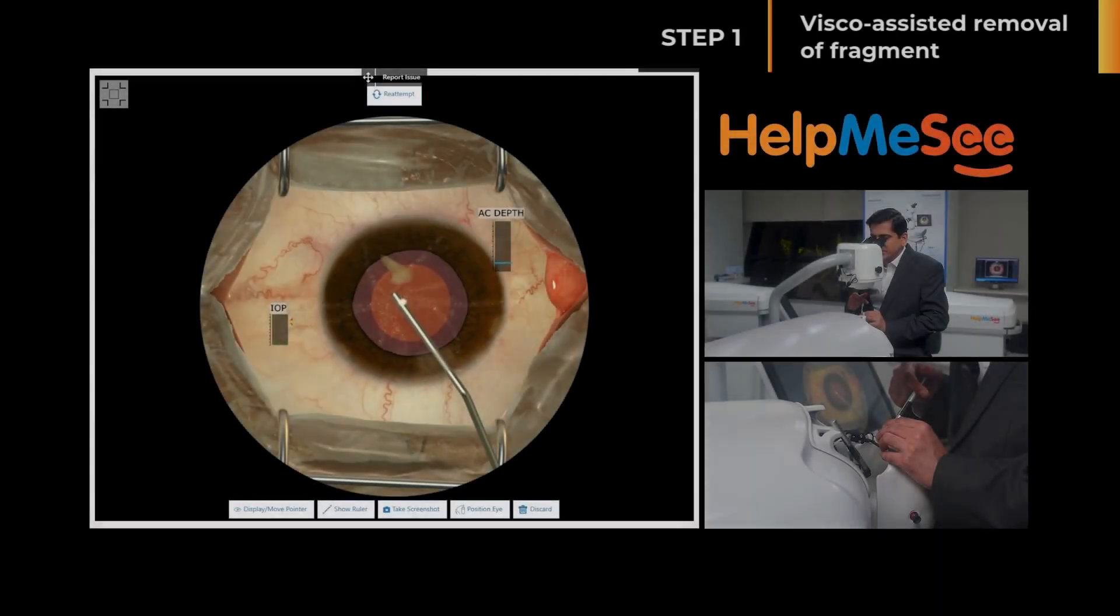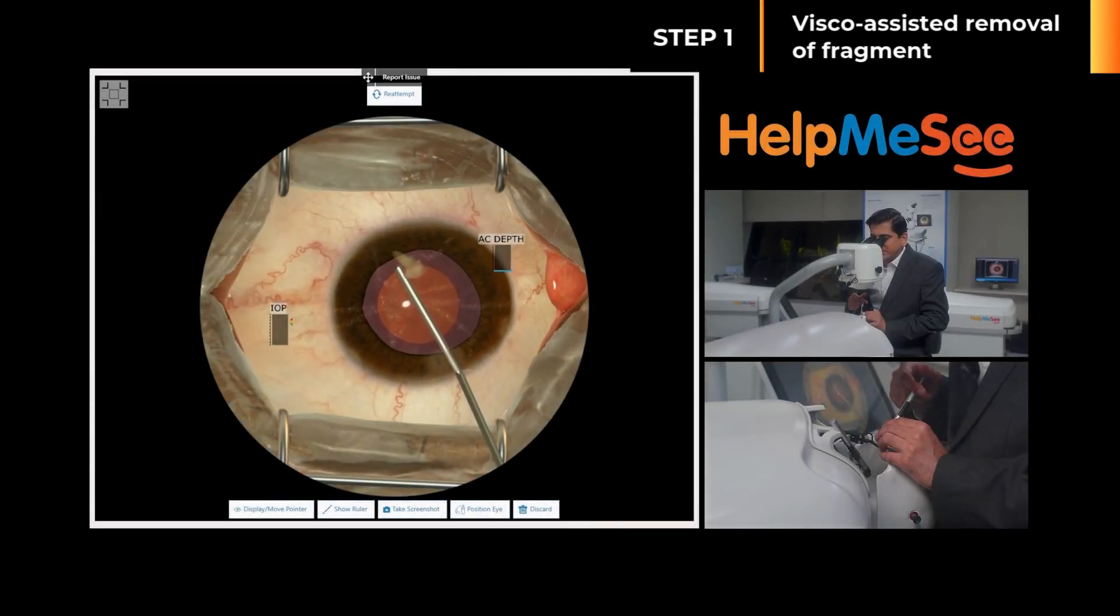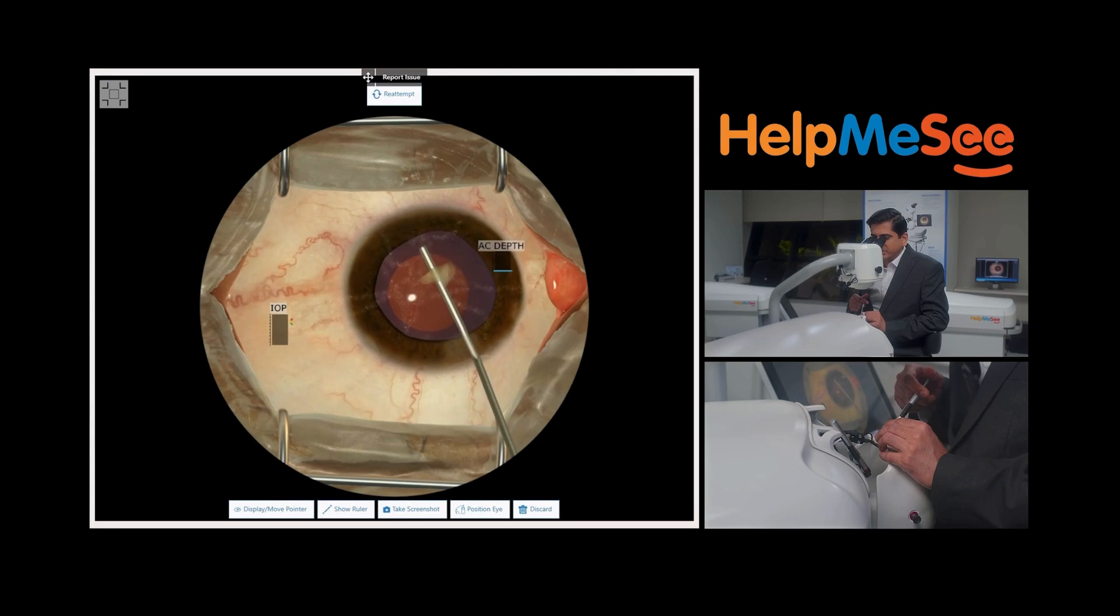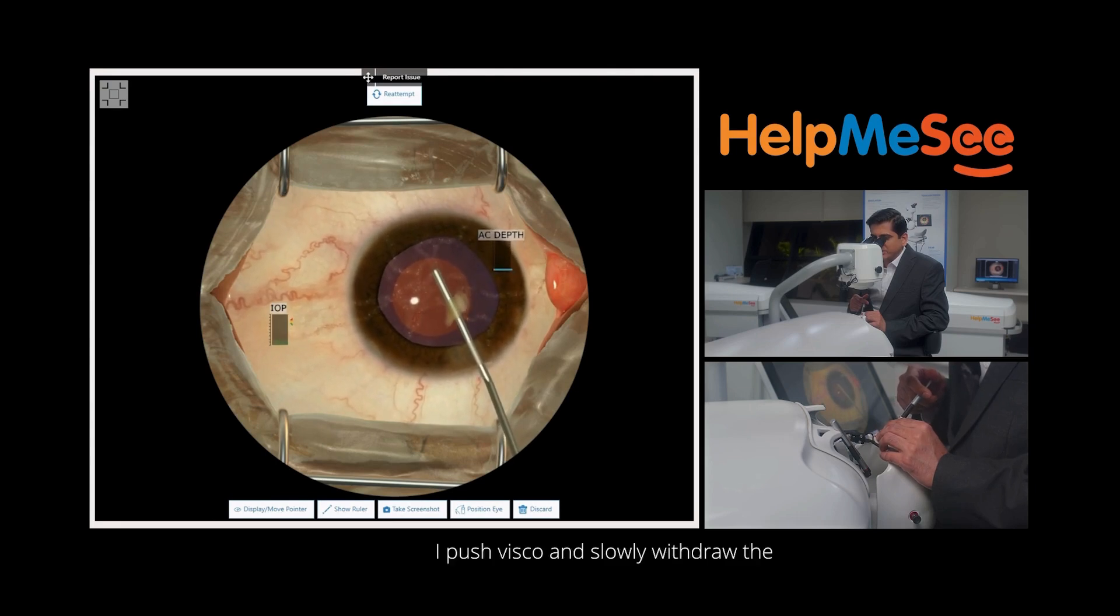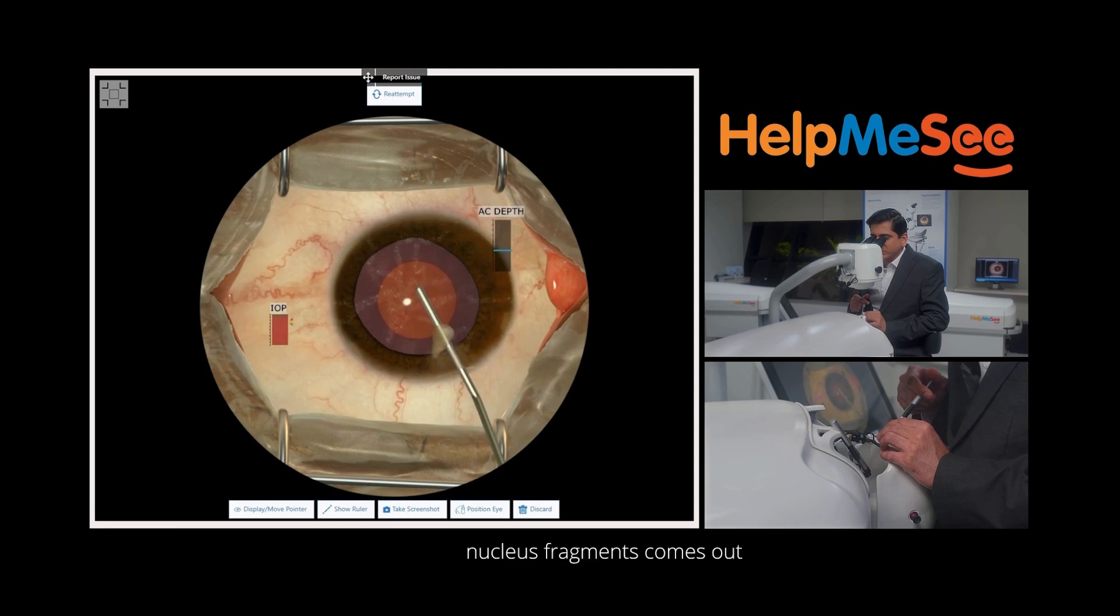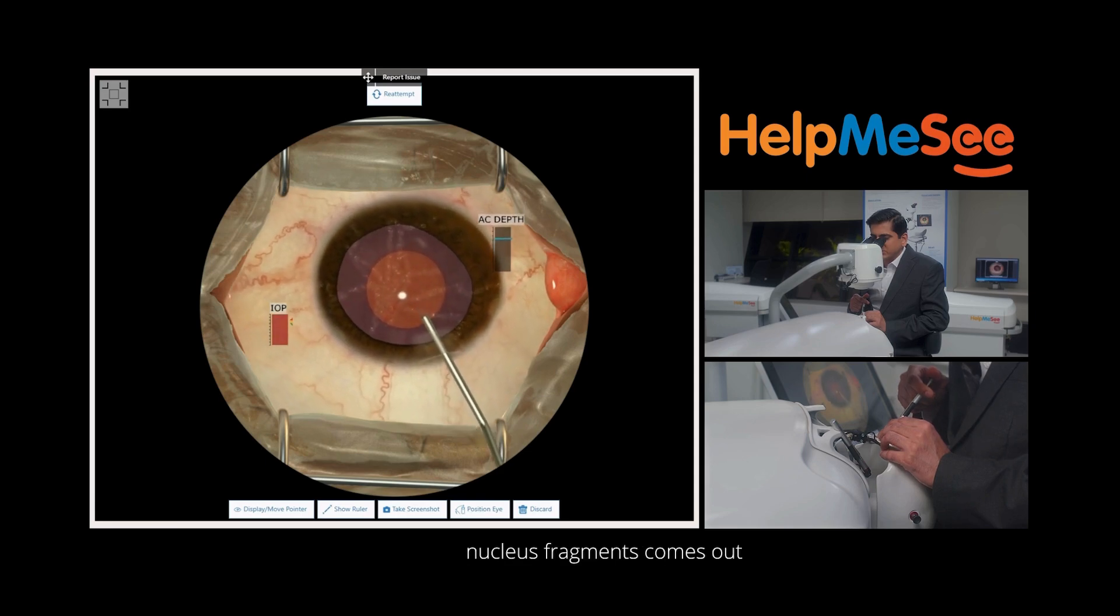I gently enter the incision. There are training tools that guide me inside the anterior chamber. I push visco and slowly withdraw the cannula so that the nucleus fragment comes out of the anterior chamber.